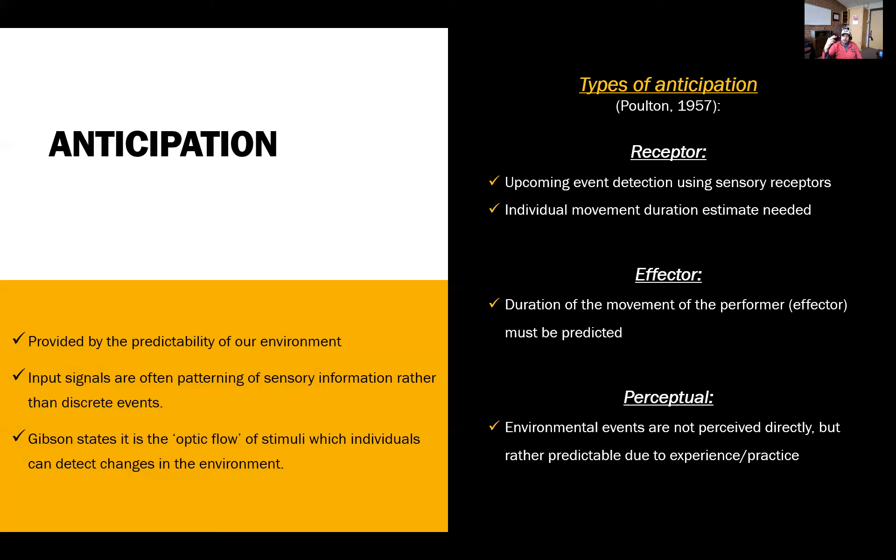Then we have the effector, which is the performer—how long am I going to take to do such task? If we combine receptor and effector, I'll use a baseball image from this class. If I'm the outfielder and somebody hits the baseball, I need to anticipate two things: receptor is where the ball is going to be, and effector is how long it's going to take me to get to where that ball is estimated to be.